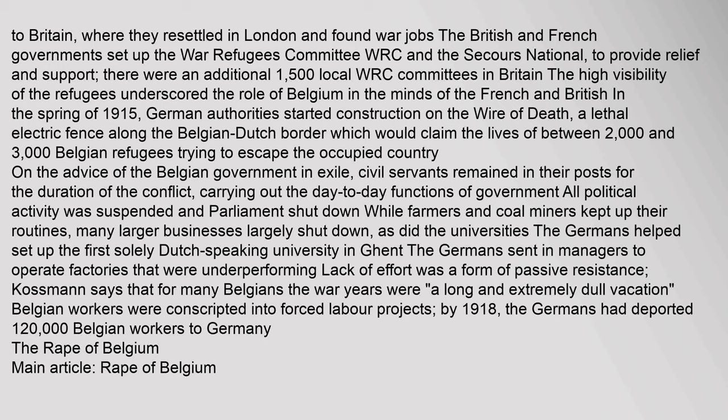The wire of death would claim the lives of between 2,000 and 3,000 Belgian refugees trying to escape the occupied country. On the advice of the Belgian government in exile, civil servants remained in their posts for the duration of the conflict, carrying out the day-to-day functions of government. All political activity was suspended and parliament shut down. While farmers and coal miners kept up their routines, many larger businesses largely shut down, as did the universities. The Germans helped set up the first solely Dutch-speaking university in Ghent. By 1918, the Germans had deported 120,000 Belgian workers to Germany.